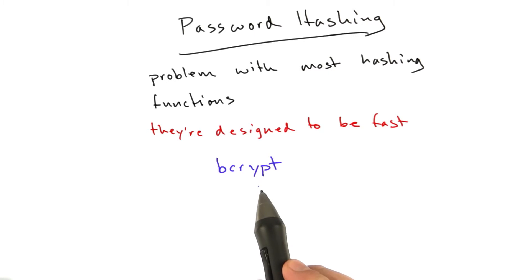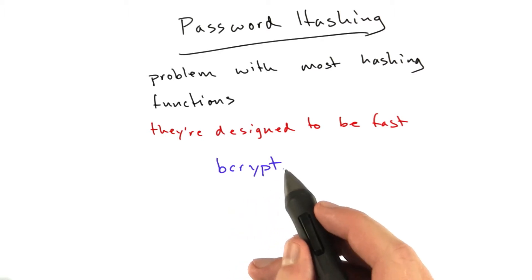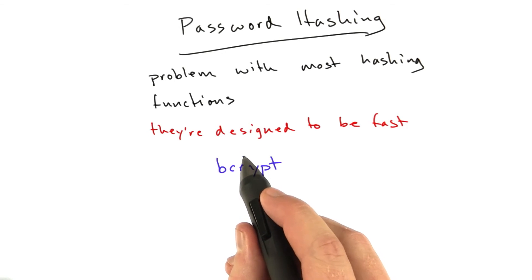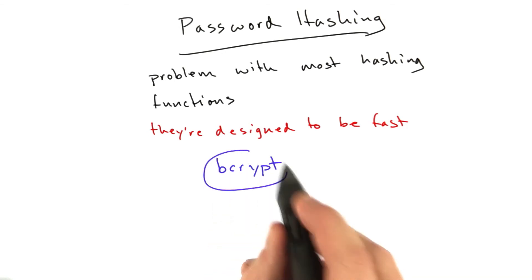The reason I didn't use it in my last example is because it's not built into Python, so it's not super convenient for me to demonstrate, and I don't want to expect you to install it. But in the future, outside this course, instead of SHA-256,